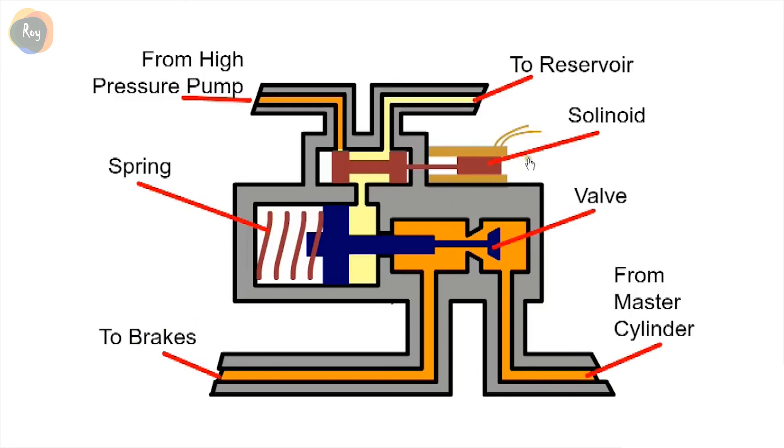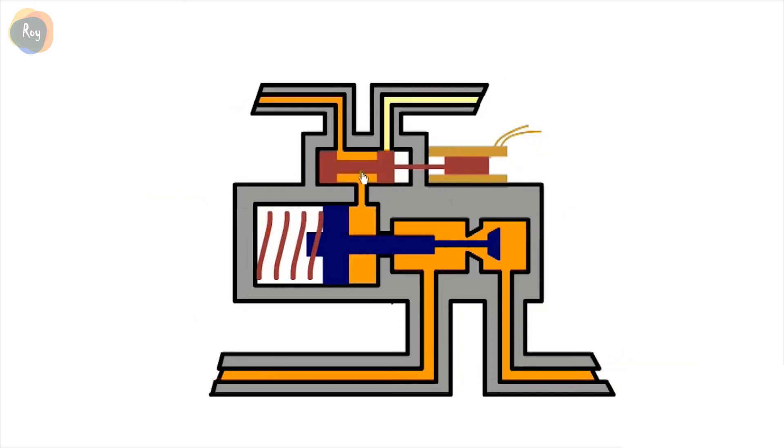When the ECU detects that a wheel is on the verge of locking, it activates the ABS solenoid. The solenoid moves to the left and allows through the high pressure fluid from the pump. The high pressure fluid exerts a force on the piston and closes the valve against the spring pressure.